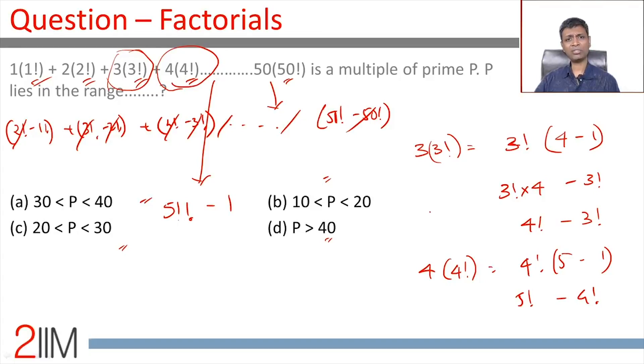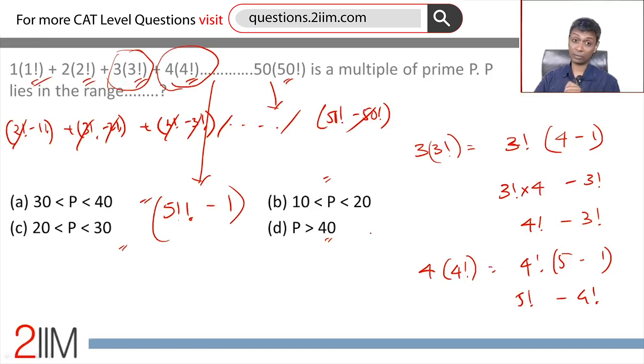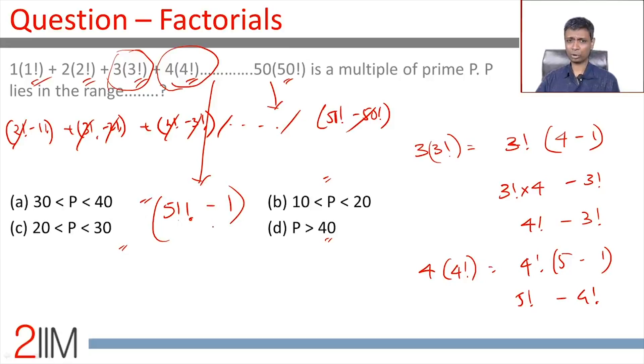Now, this 51 factorial minus 1 is a multiple of prime p. p lies in which range? Now, we have done the manipulating the factorial part. We come to the number systems part of it. How the hell do we know what this prime p is? Key part here. We don't need to find that prime p. The choices are very interesting. 10 to 20, 20 to 30, 30 to 40, more than 40. Might a prime from 10 to 20 divide this? Think about this. 51 factorial minus 1. Will 11 be a factor of this? Break it differently.